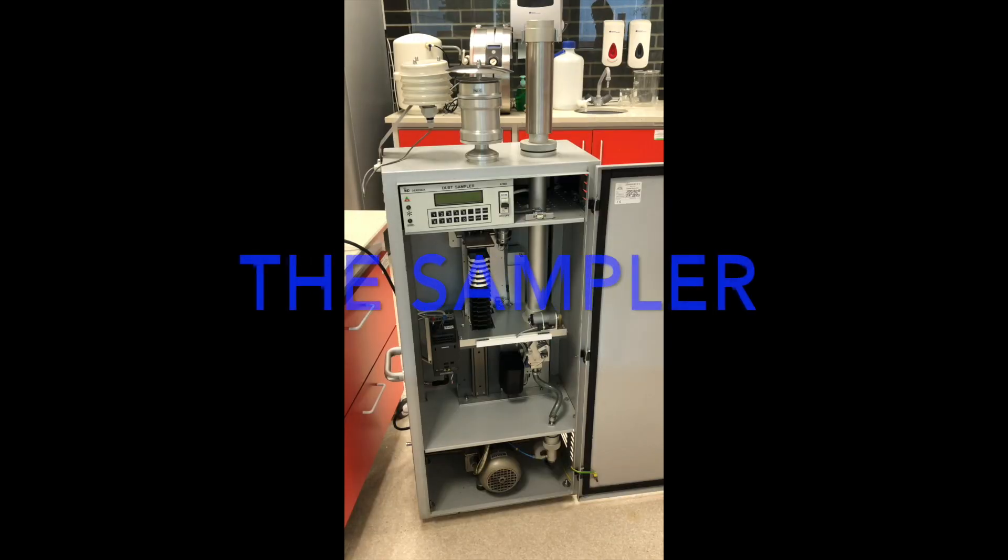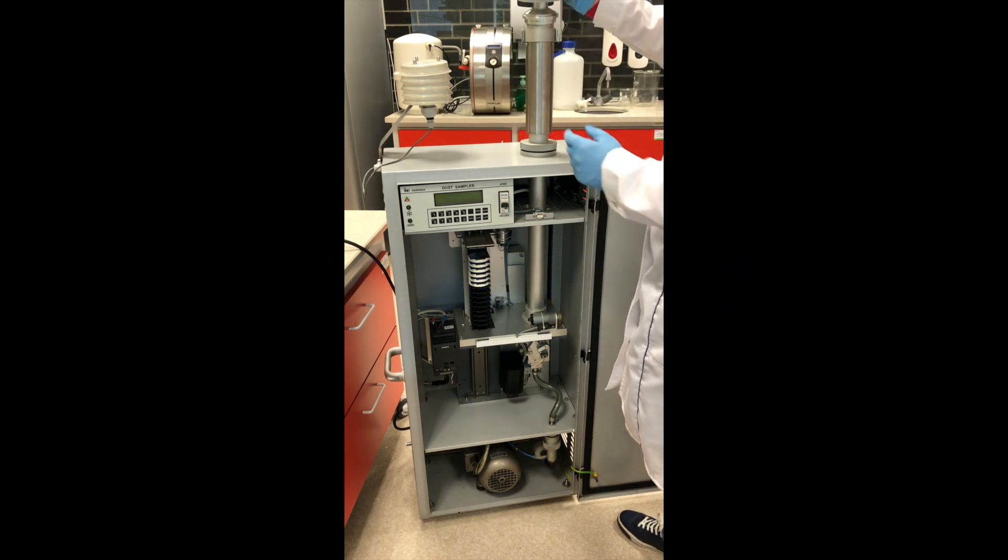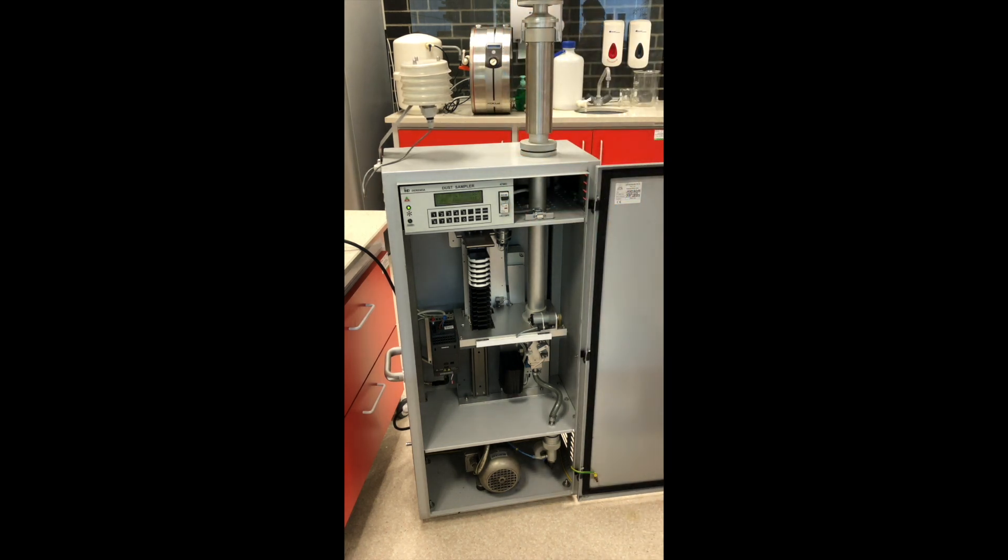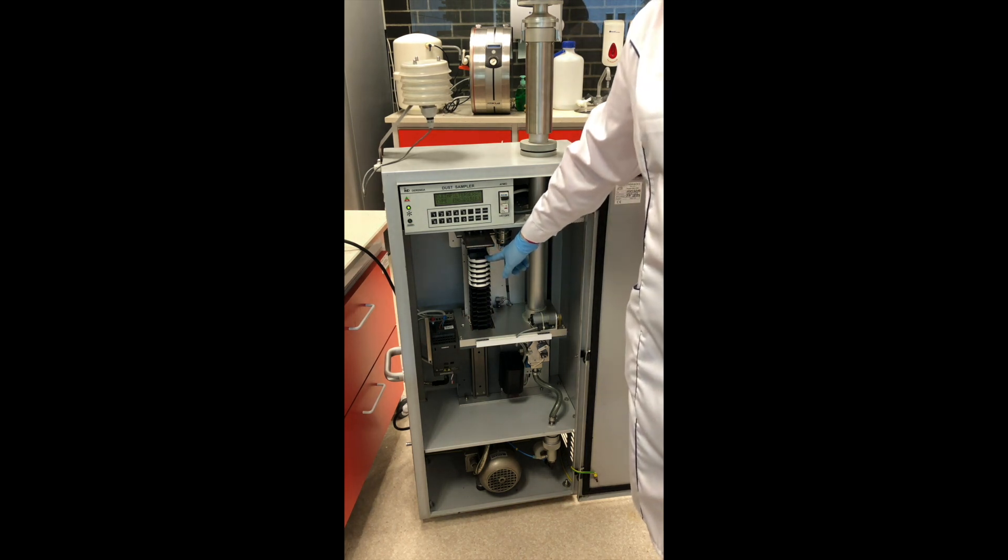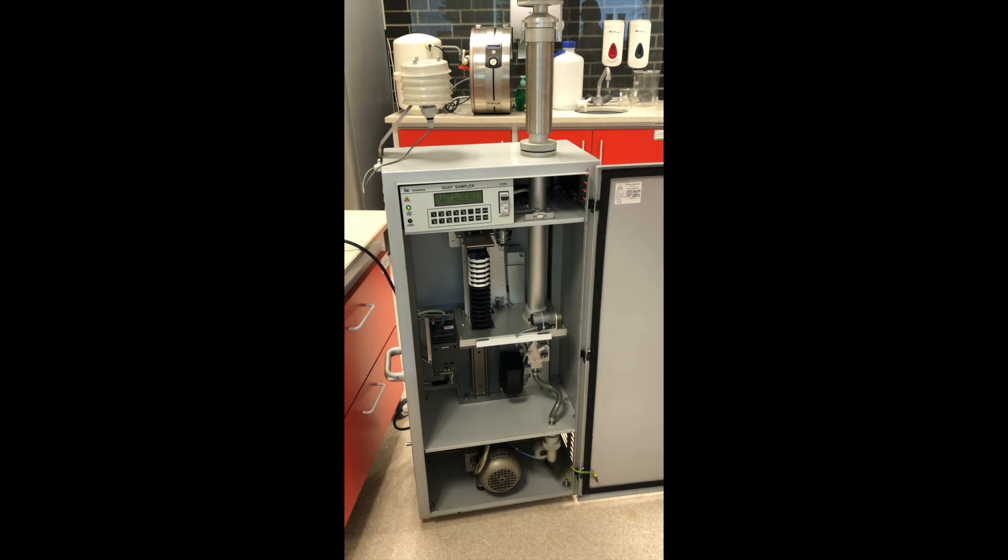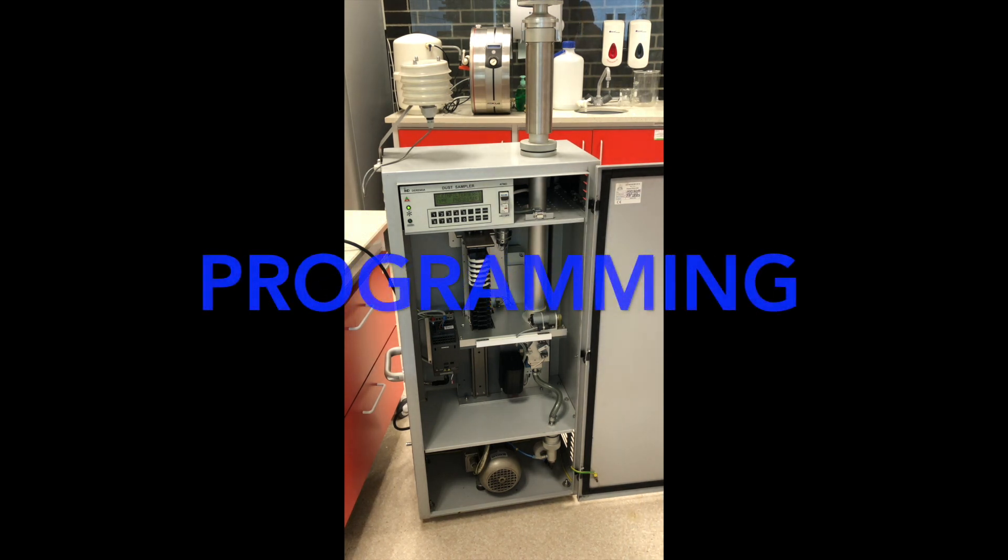Here is how the sampler looks like. We have our measuring heads. We have to put it on the top and we turn on the sampler. In the time, we can change the cassette. We have filters here and then we have to program the use of the sampler.